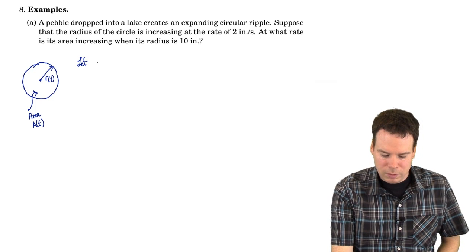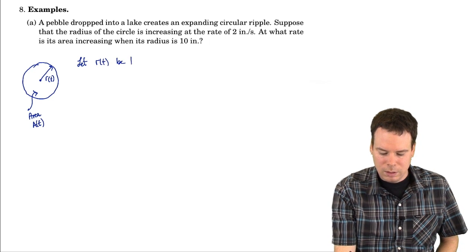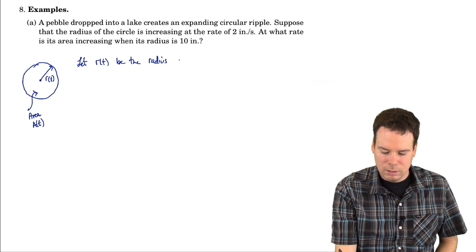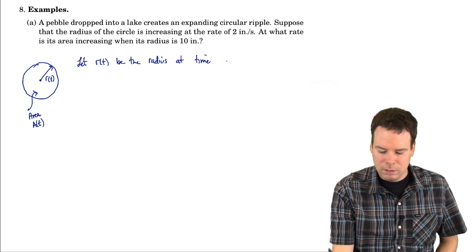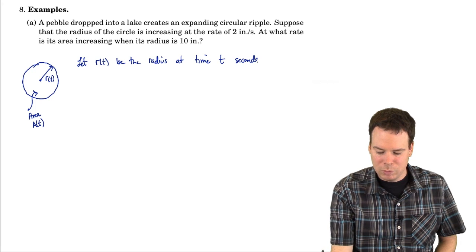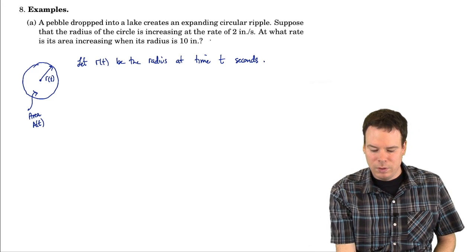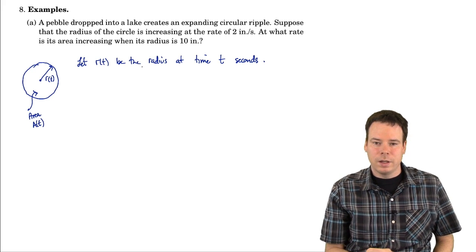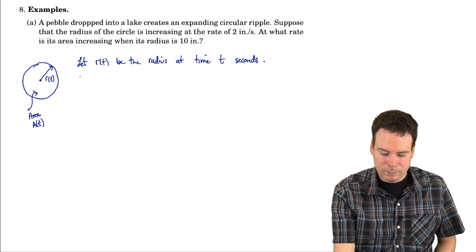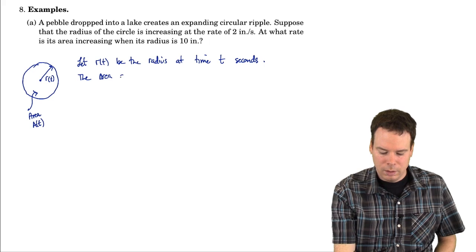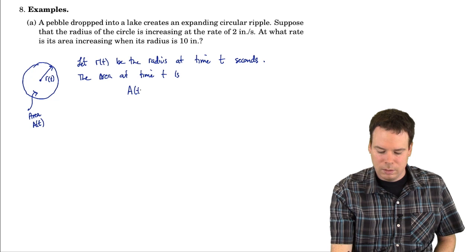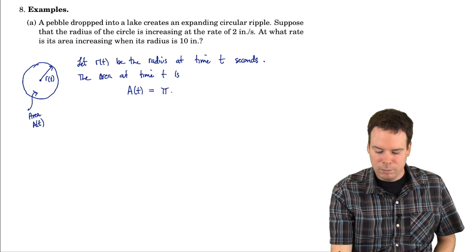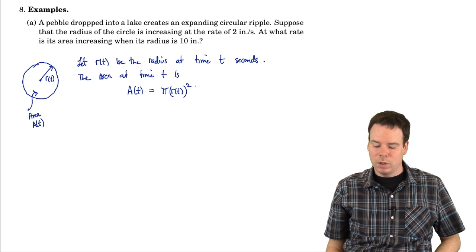Let r of t be the radius at time t, which is measured in seconds. It's always good, if you haven't had variables introduced in the question and you decide to introduce some in your solution, to declare to the reader what your variables represent. So the area at time t is pi times the radius squared, and the radius is a function of t, so it's pi times r of t, all squared.